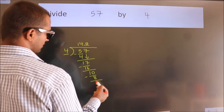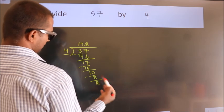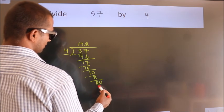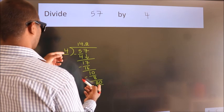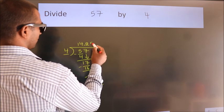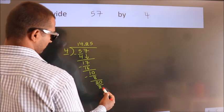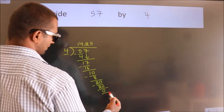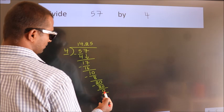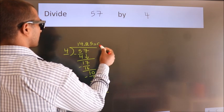After this, we already have the decimal. So directly take 0. So 20. When do we get 20? In 4 table, 4 5s 20. Now we subtract. We get 0. We got remainder 0. So this is our quotient.